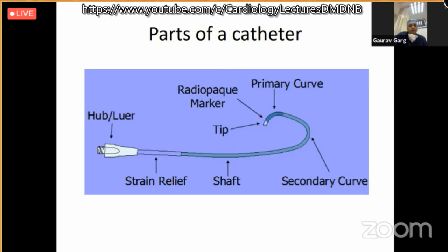What are the parts of a catheter? The catheter has a hub, a shaft, and a tip, and curves which are given differently by different manufacturers. The hub is made up of plastic or metal, from where we hold the catheter, and it tapers so the wire can go easily inside the shaft. The shaft is made up of different materials to give it the characteristics of an ideal catheter.